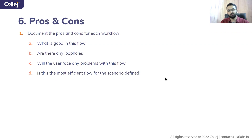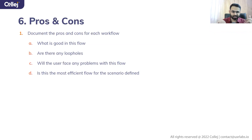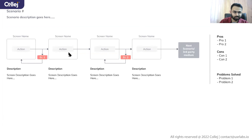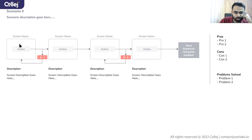Next, document pros and cons — because the first workflow you come up with may not be the best. What is good in the flow? Document that. Are there any loopholes or disadvantages in terms of speed or effort? Will the user face any problems? Is this the most efficient flow for the scenario? Ask all these questions and document pros and cons for each workflow. Consider the scenario, the flow, descriptions, names, actions, error states, pros and cons, and problems solved.